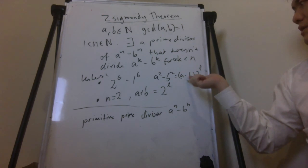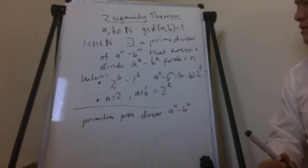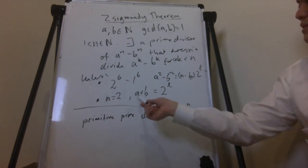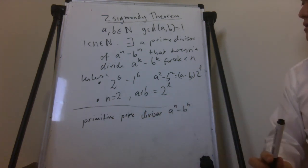But 2 would already divide a minus b. Because if a plus b is even, then a minus b should be even. Because a plus b and a minus b are the same mod 2.